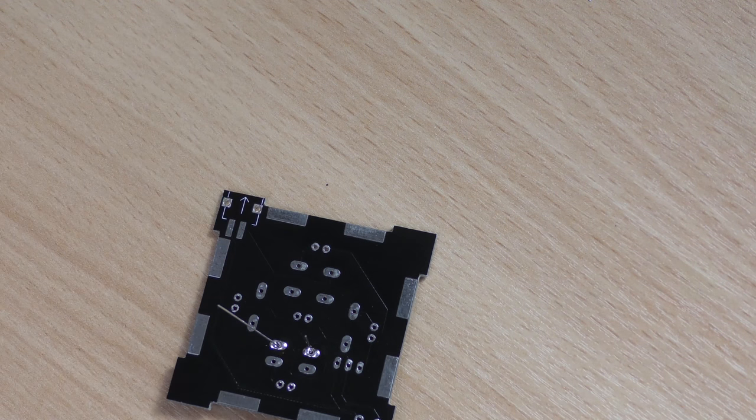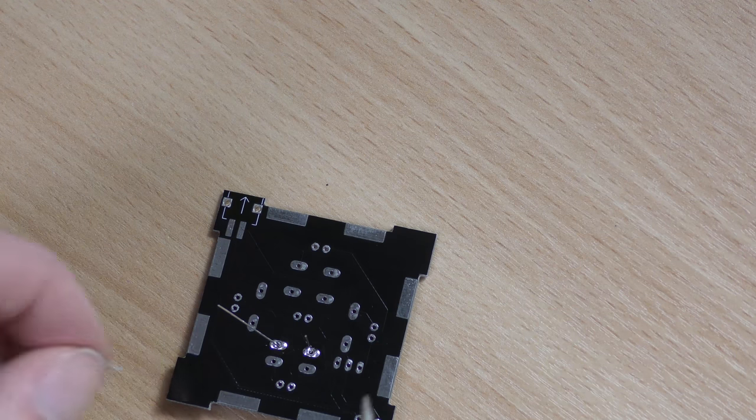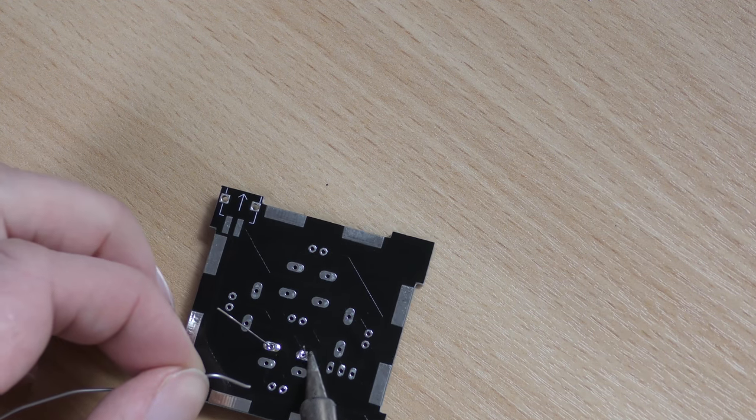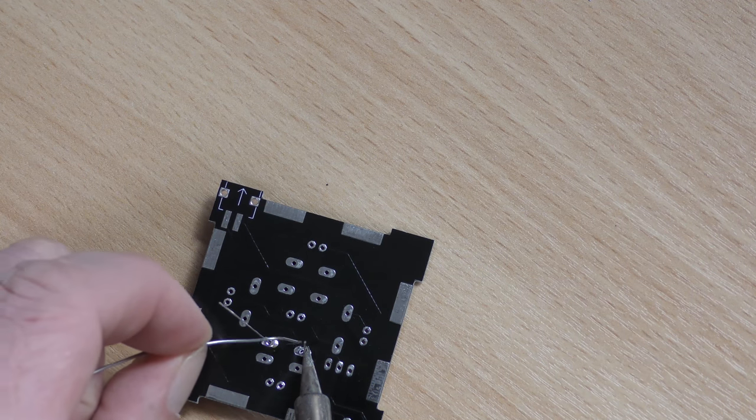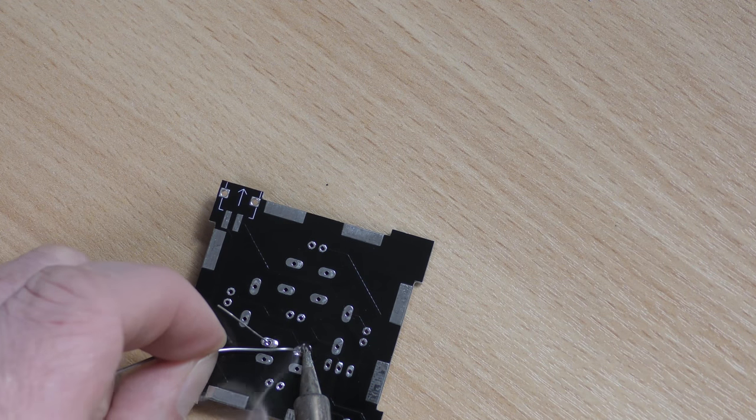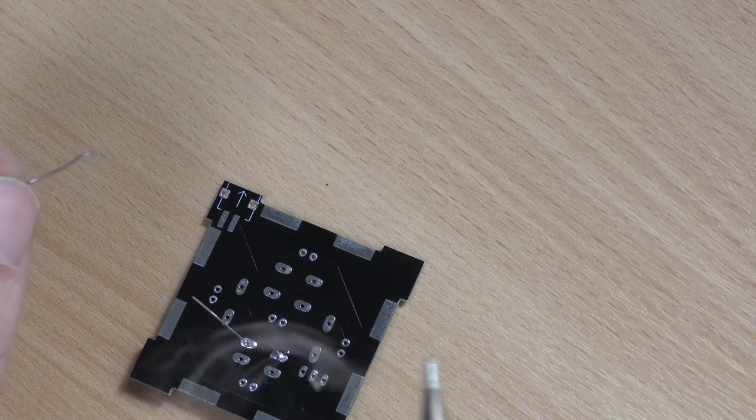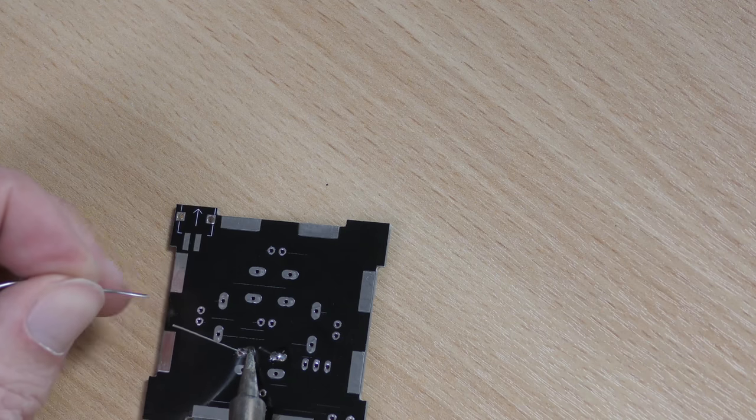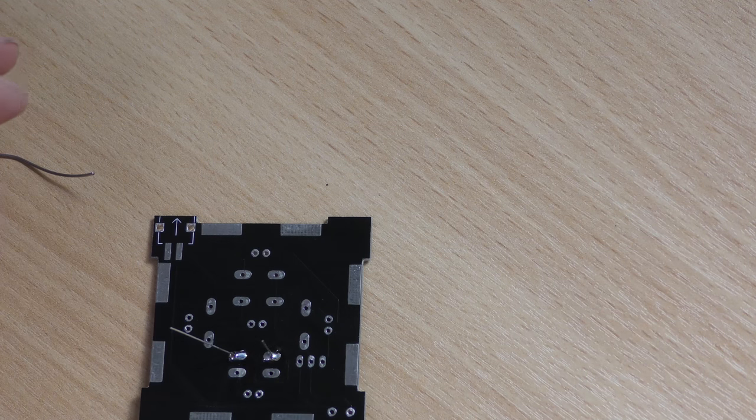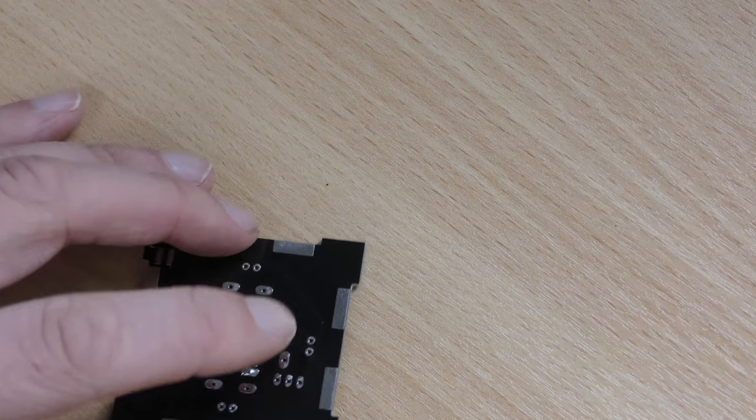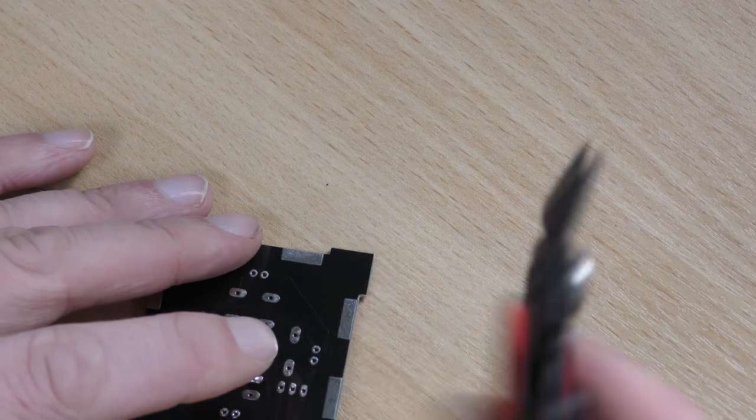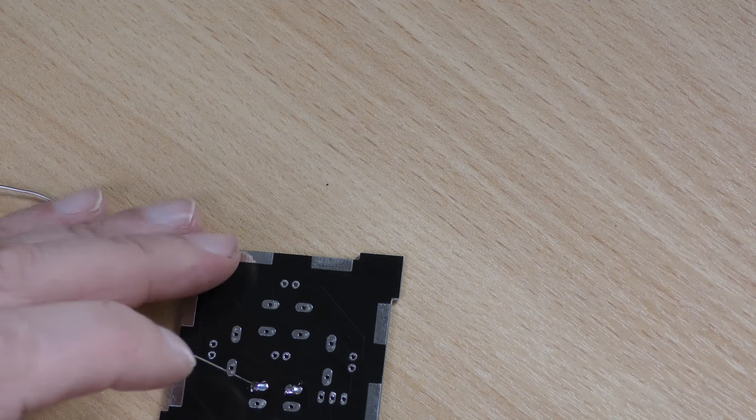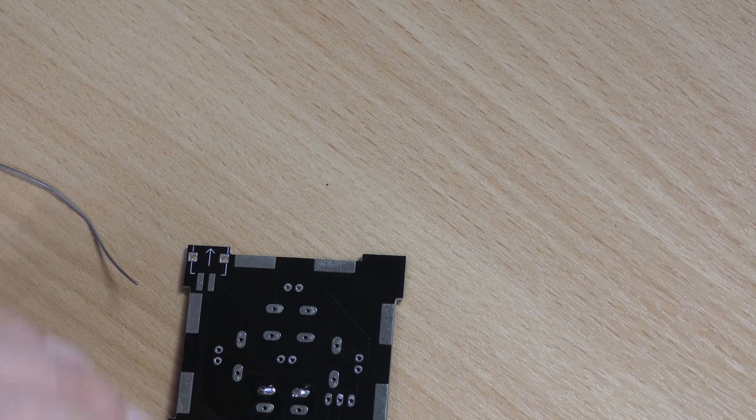And then simply solder it into place. So tin your iron, and then holding the edge of the iron against the pin and the pad, feed the solder, remove the solder, and then away. And again, once that's soldered, you need to remove the legs. So using a pair of side cutters, snip while holding the top of the pin, and that'll stop it flying off.